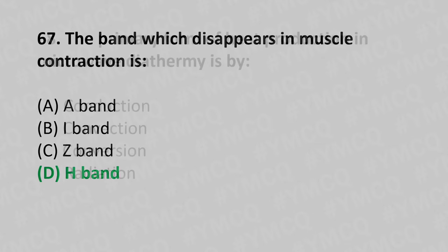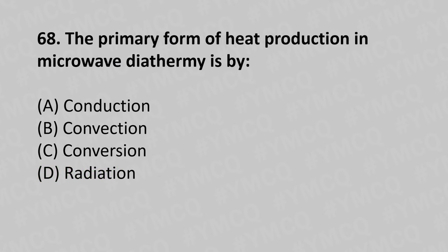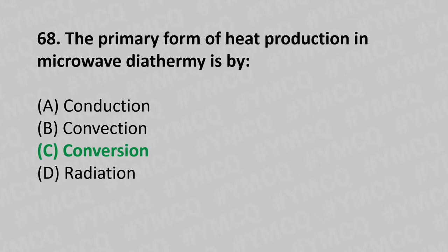Moving to our 68th question. The primary form of heat production in microwave diathermy is: Option A, Conduction; Option B, Convection; Option C, Conversion; Option D, Radiation. And the answer is Option C, Conversion.